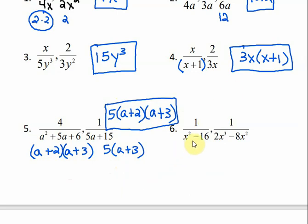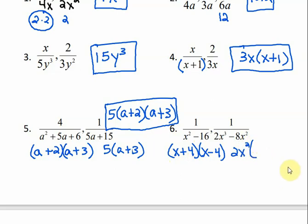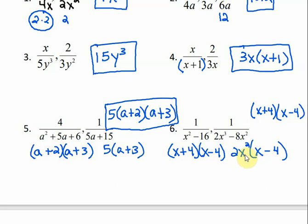For number 6, we're going to factor the first denominator using difference of perfect squares. That would factor into x plus 4, x minus 4. In my second denominator, I have a greatest common factor of 2x squared. If I factor out the 2x squared, I'm left with x minus 4. So in my least common denominator, x plus 4 occurs once here and zero times in the second, so it shows up once. x minus 4 happens once in each, so we use it once. 2x squared shows up in the second denominator, so we include that as well. All of this makes up my least common denominator.